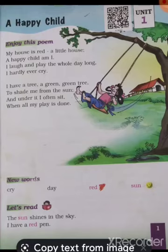In this poem, the poet is saying: My house is red — it means the house is red in color. A little house — it means a small house. A happy child am I — it means I am a happy little child.